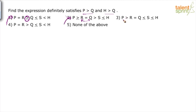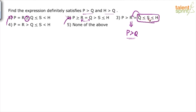In option 3, P greater than R and R equals Q, so P greater than Q — the first part is satisfied. But for H greater than Q: H is greater than or equal to S, and S is greater than or equal to Q, giving H greater than or equal to Q — not strictly greater. So option 3 is also wrong.